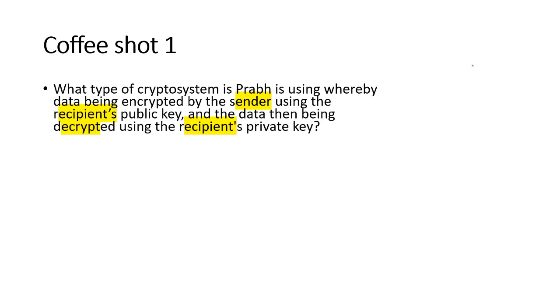Coffee Shot 1: What type of crypto system is Prab using whereby data is encrypted by the sender using the recipient's public key, and data is decrypted using the recipient's private key? We have two key words here: public key and private key. Before discussing the options, let me give you a high-level idea about symmetric and asymmetric cryptography.